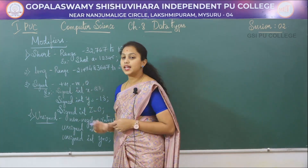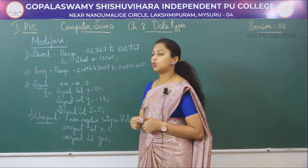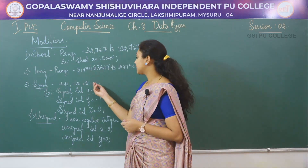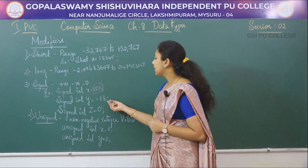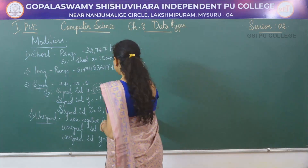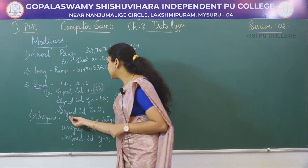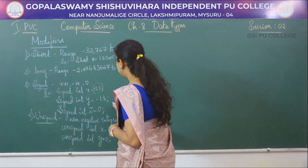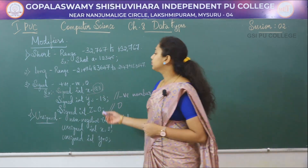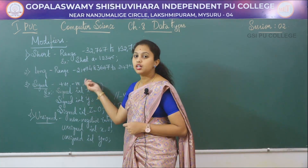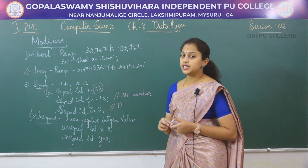The next types are signed and unsigned integers. In a signed integer, it holds both positive as well as negative integers including 0. For example, signed int x = 23 represents a positive number, signed int y = -13 represents a negative number, and signed int z = 0 holds zero. So in signed integer we can store both positive and negative numbers including 0.